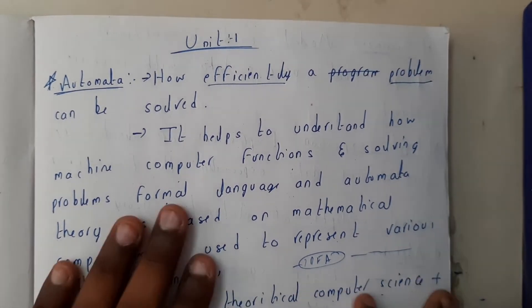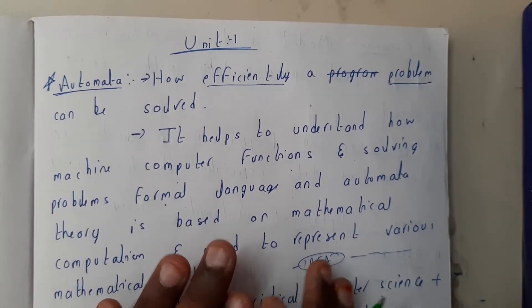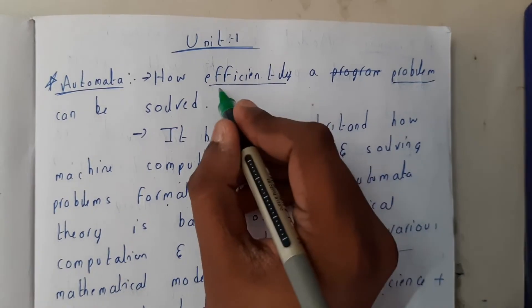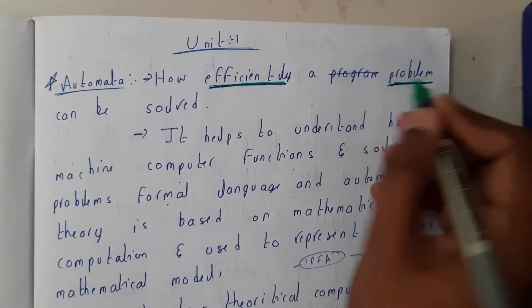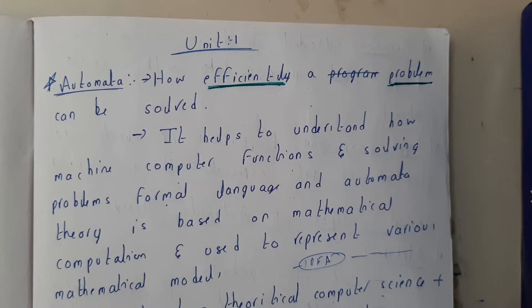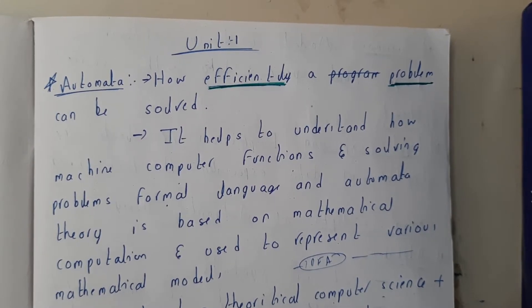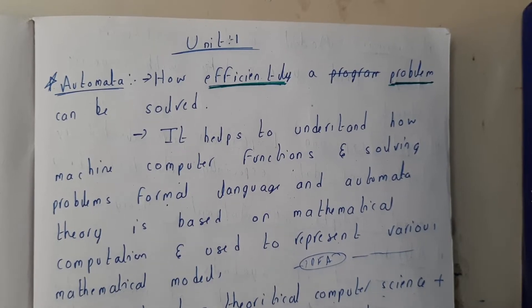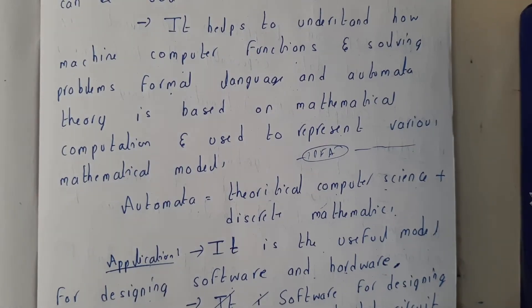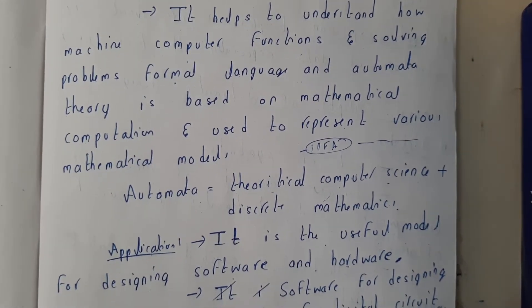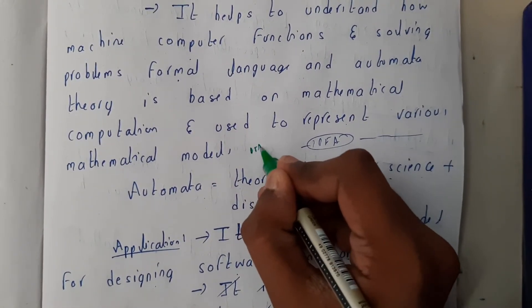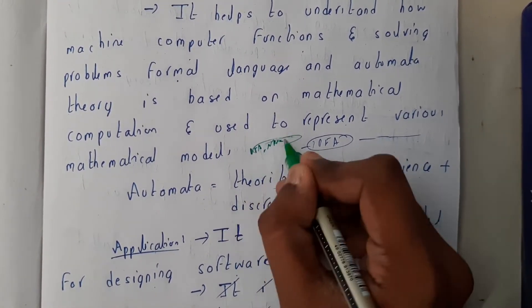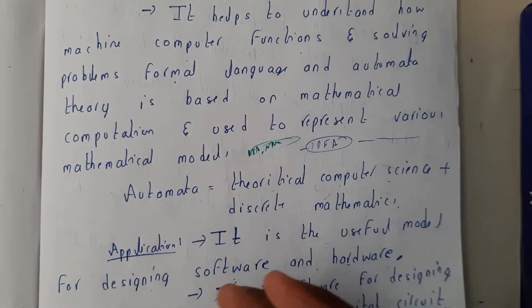The main use of automata is to measure efficiency — how efficiently a problem can be solved. If there is a problem or an algorithm, automata can judge whether it is going to give a solution or not, giving you a detailed idea. There are many things like DFA, NFA, and many more which help us do all those things.